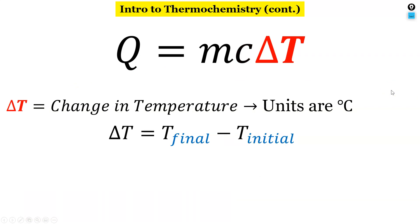And finally delta T is a change in temperature, and the units are going to be in degrees Celsius. So to find delta T we'll take the final temperature minus the initial temperature and that'll be equal to delta T.